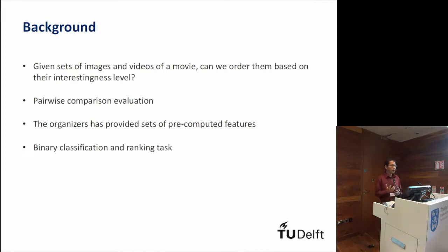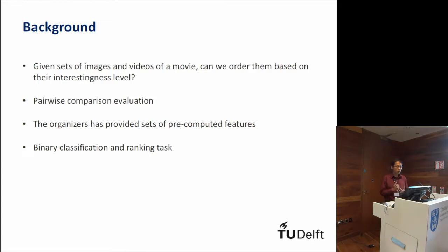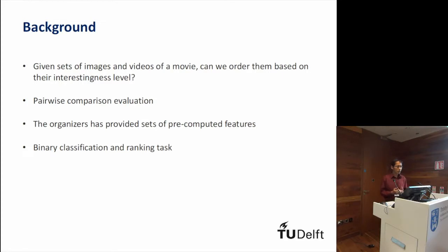This task has been thoroughly explained by Claire in the previous presentation, but here I'll recap several key points important to building our approach. The first is that the task itself involves a given set of images and videos of a movie, and ordering them based on their interest level. The second is the notion of pairwise comparison evaluation. Third, for our approach, we use the precomputed features provided by the organizers. And finally, in a way, this is both a binary classification task and a ranking task.